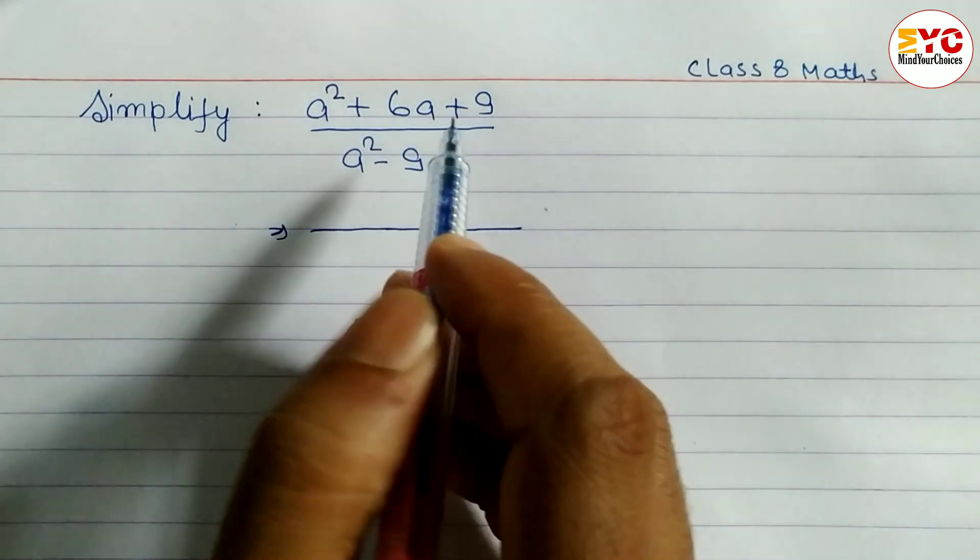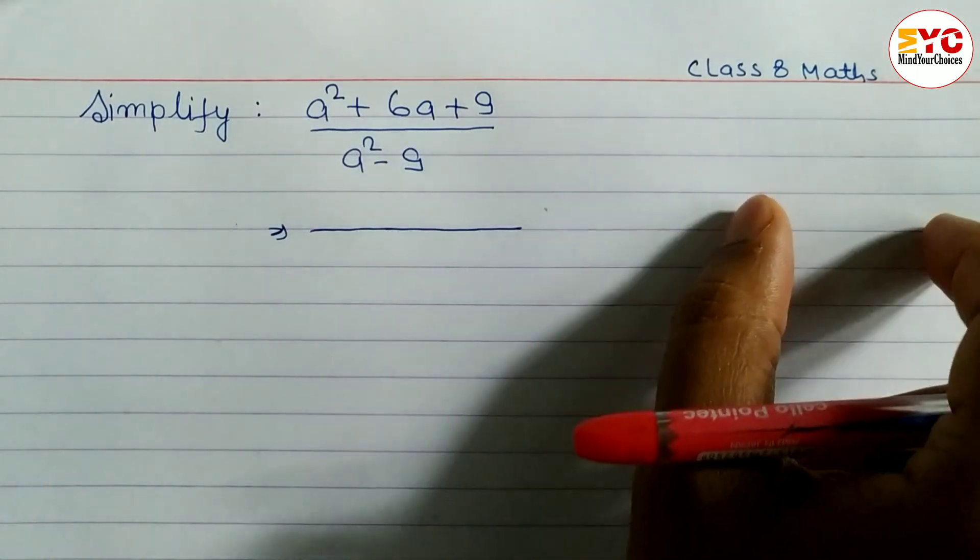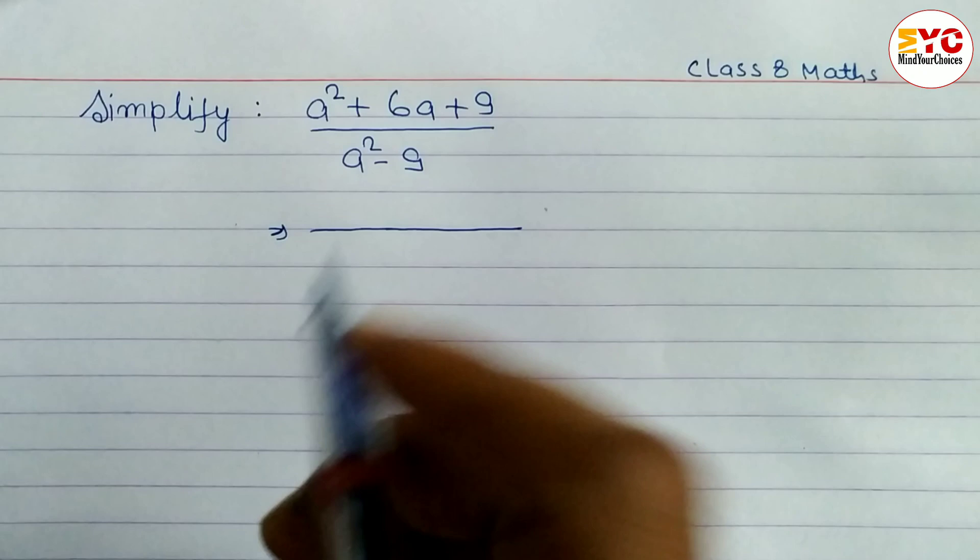So you can see here in the numerator, first of all we have to factorize this. You can factorize in rough or you can factorize directly here.